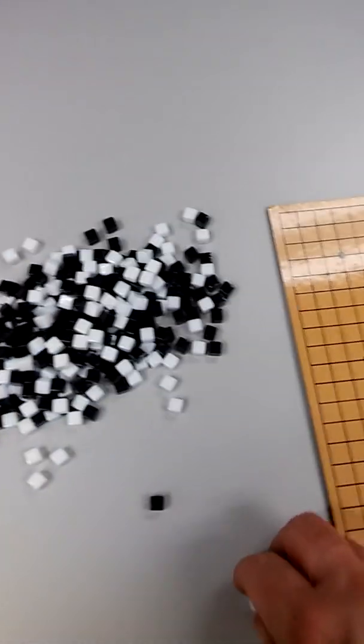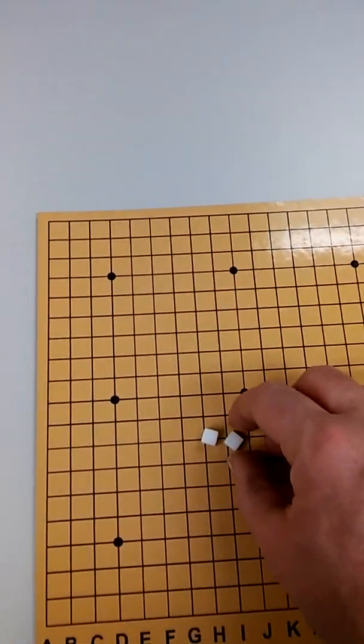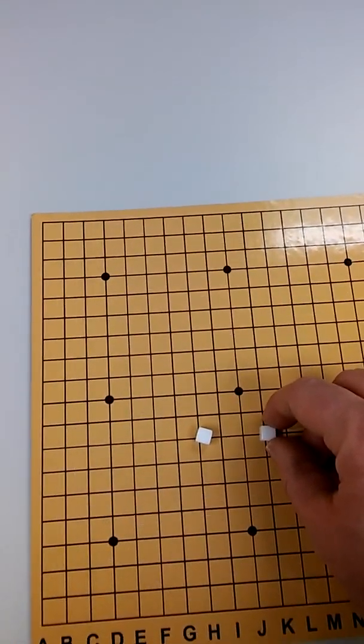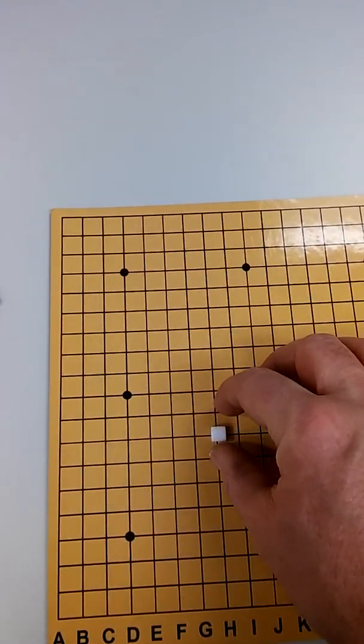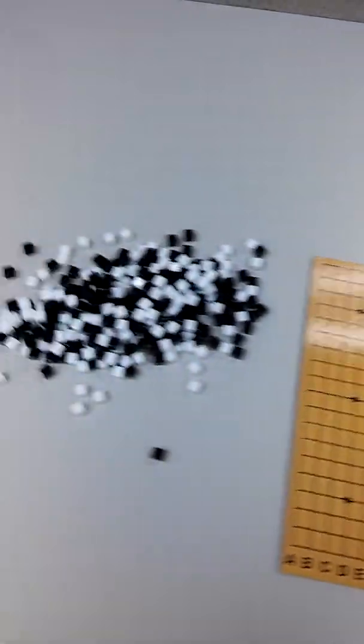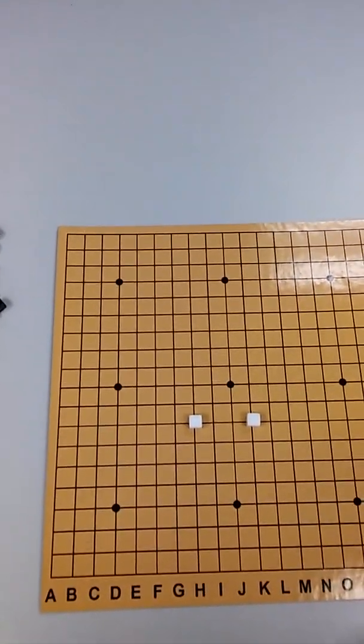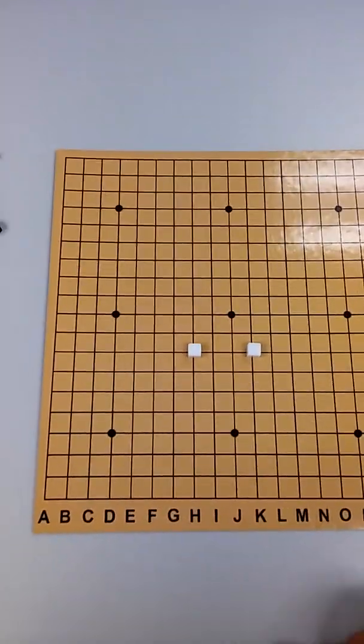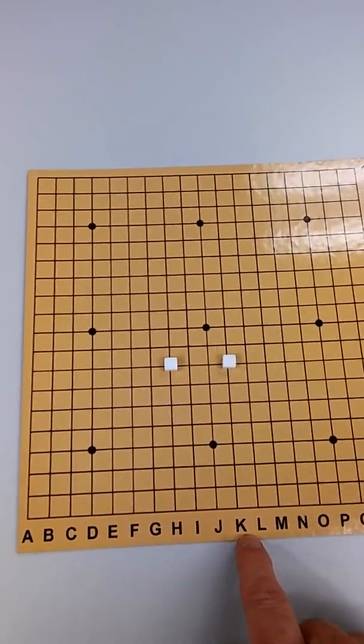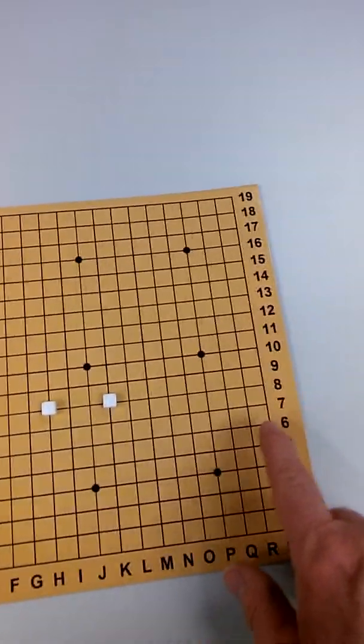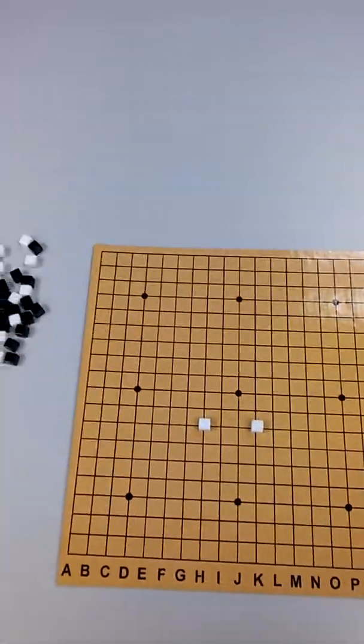So white's first turn, white can place two pieces on this board. These are called stones. I've kept the name stones, but since I made them into cubes instead of round disks, you can call them cubes also. So let's say white does that. So that would mean white played H8 comma K8. And that would be white's turn.